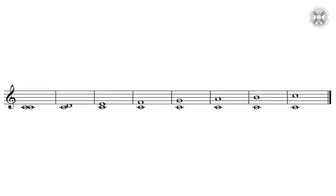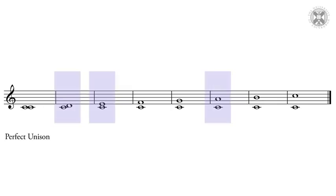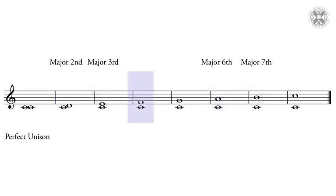We're going to use the major scale as our reference point for naming all intervals, and this will give us a set of interval descriptions that match music theory convention. Working from left to right: two notes at exactly the same pitch are in perfect unison. The distance from the first to the second, third, sixth, and seventh degrees are described as major second, third, sixth, and seventh respectively. The distance from the first to the fourth, fifth, and eighth are called perfect fourth, fifth, and octave respectively. So in each case we have a quality — either major or perfect — and a number.